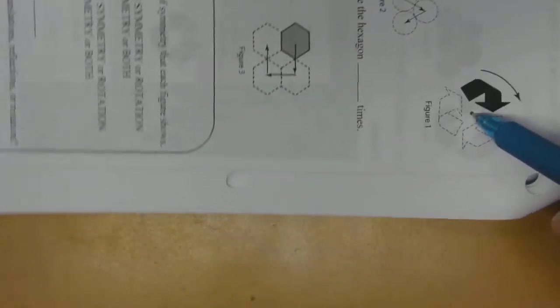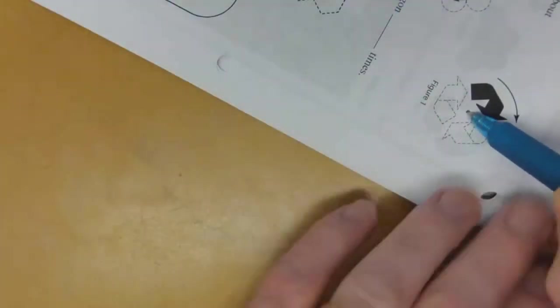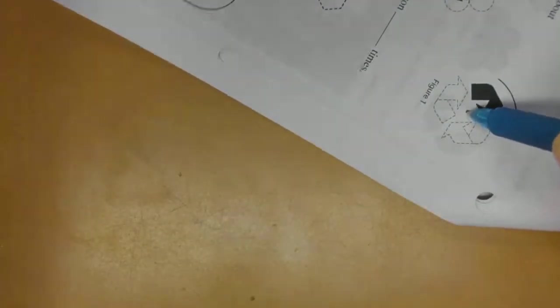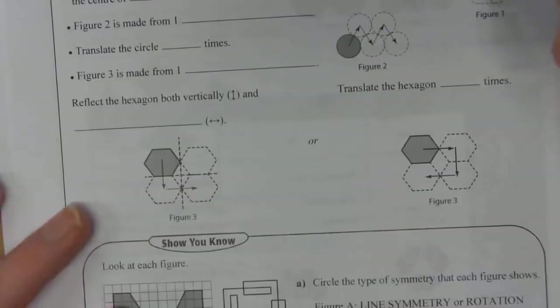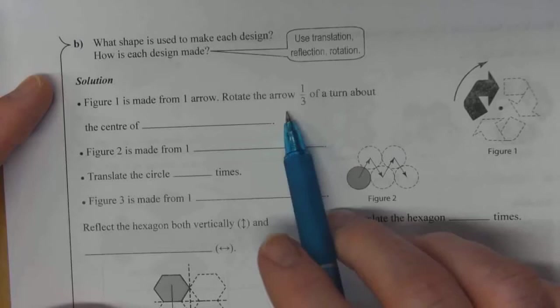You can rotate it a third of a turn and you will fill this other dotted section here, and then you can do another third of a turn to get the third one. So you can make copies that are rotations—rotate the arrow one-third of a turn about the center of rotation.